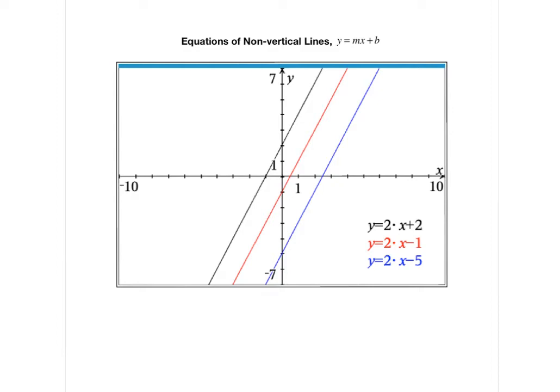Every equation of the form y equals a number times x plus some other number is always going to produce a line in two dimensions. This is a very special form of linear equations called the slope-intercept form. That's what we are going to now study.